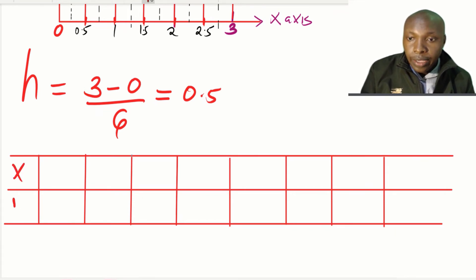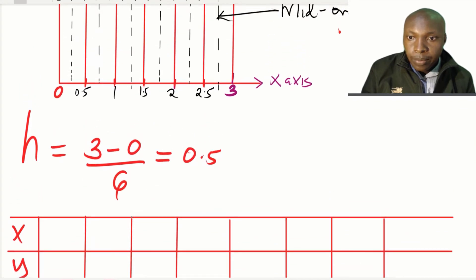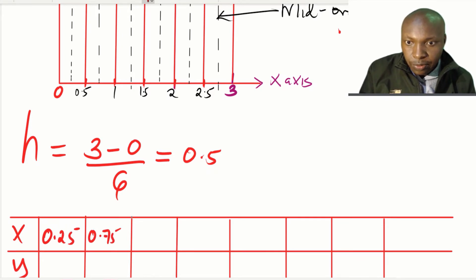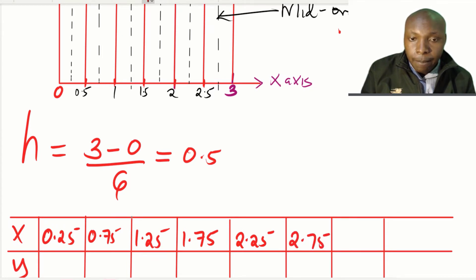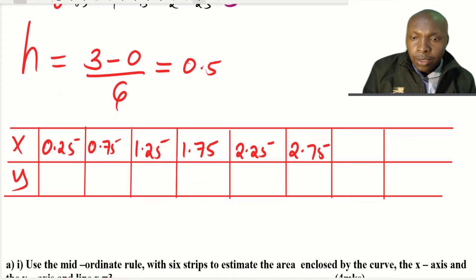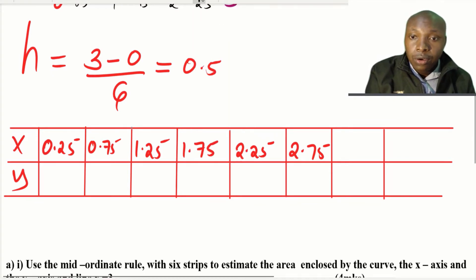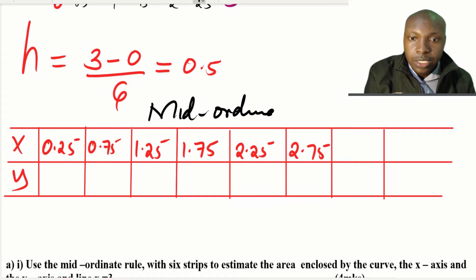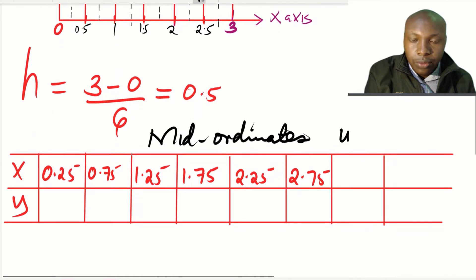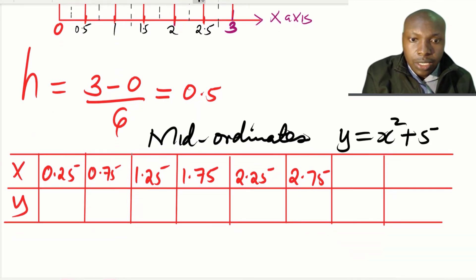In the table, the x mid-ordinate values are: between 0 and 0.5 we have 0.25; between 0.5 and 1 we have 0.75; between 1 and 1.5 we have 1.25; between 1.5 and 2 we have 1.75; between 2 and 2.5 we have 2.25; and between 2.5 and 3 we have 2.75. For y, we use the function y = x² + 5.